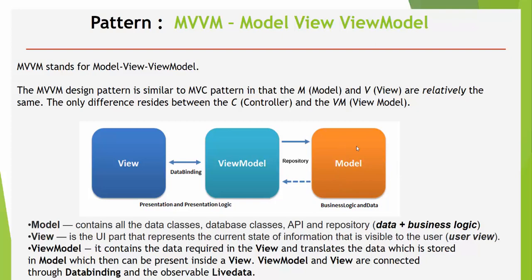And the ViewModel is something in between. It contains the required data for the View and translates the data stored in the Model so it can be presented inside the View. In this case, ViewModel and View are connected through data binding and observable LiveData, which we'll talk about in the next lecture. And ViewModel is connected with the Model using repositories.